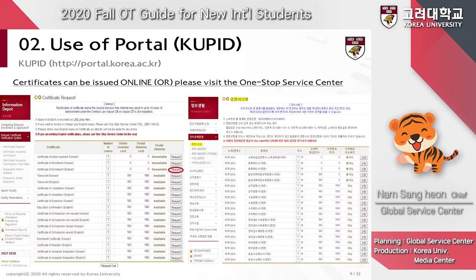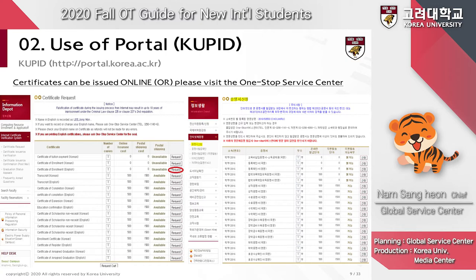On QPID, you can also get your certificates and different documents issued. And for your information, you can actually get these same documents issued at the one-stop service center on campus by visiting in person as well.